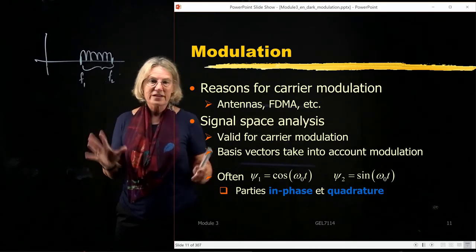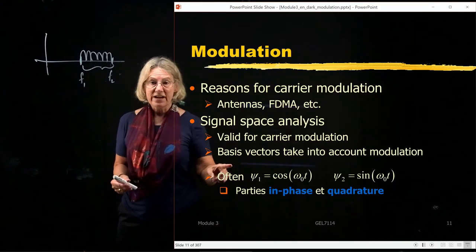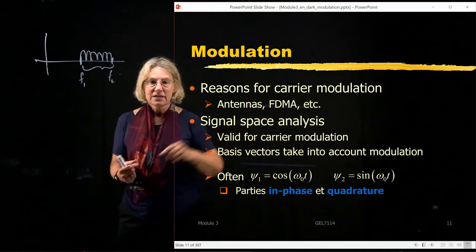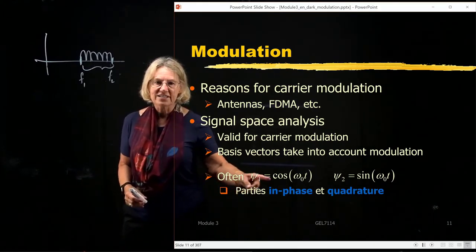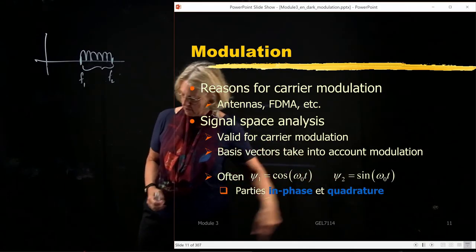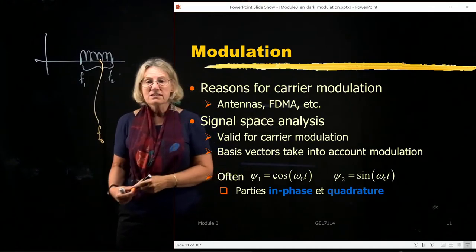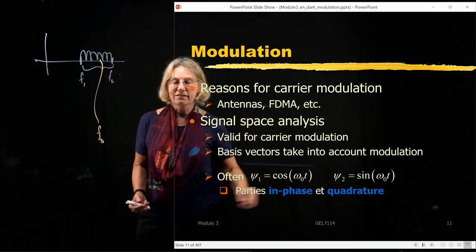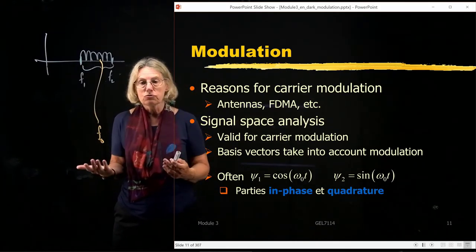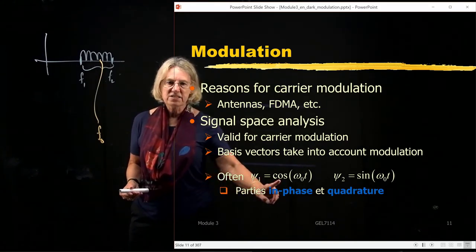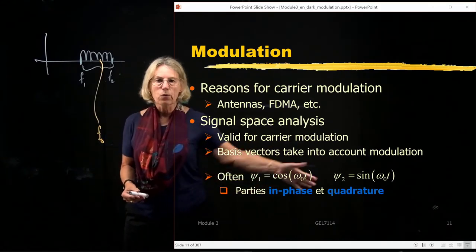We're doing signal space analysis, valid for carrier modulation. In signal space analysis, the basis vectors take into account the carrier. For instance, we often come up with a basis which has cosine(ω₀ t) and sine(ω₀ t). We have vocabulary for this: the cosine is the in-phase part, and the sine part is called the quadrature part. So there are two basis vectors: the in-phase basis vector and the quadrature basis vector.